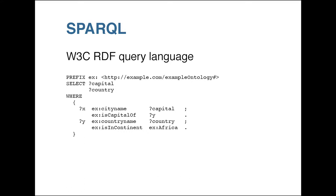RDF is absolutely widely used and has nice features for federation - there are many public RDF databases published by research institutions. You can link them together, which fits that semantic web idea. However, SPARQL is really just a query language; it doesn't do transactions, data definition, or anything like that - it's really just querying.